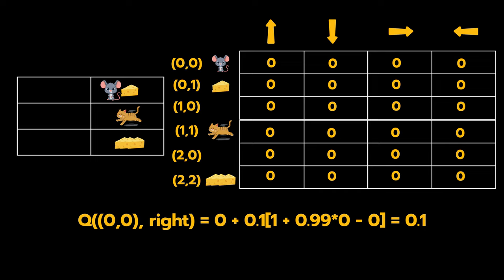Plus our gamma, which is the discount factor, which is 0.99, into the best possible Q value. In this case, if we see, the best possible Q value is 0 throughout because our initial table is all 0s, minus our former Q value estimate, which is again 0. So if we calculate, then our Q value estimate for state (0,0) given with an action right is 0.1.